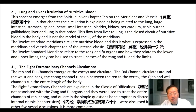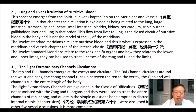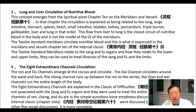Two: lung and liver circulation of nutritive blood. This concept emerges from the spiritual pivot chapter 10 on the meridians and vessels. The circulation is explained as being related to the lung, large intestine, stomach, spleen, heart, small intestine, bladder, kidney, pericardium, triple burner, gallbladder, liver, and lung in that order. This flow from liver to lung is the closed circuit of nutritive blood in the body and is not the model of qi in the meridians. The 12 standard meridians circulate nutritive blood; they relate to the zang and fu organs and how they relate to the lower and upper limbs, and can be used to treat illnesses of the zang and fu and the limbs.